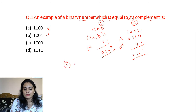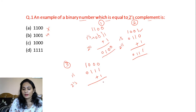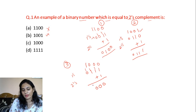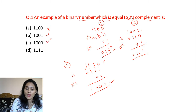Now let's check the third option. The 1's complement of 1000 is 0111. Now let's apply the 2's complement by adding 1: we get 1000 with carry over. The 2's complement result is 1000, and the original number was also 1000. So Option C is our correct answer.